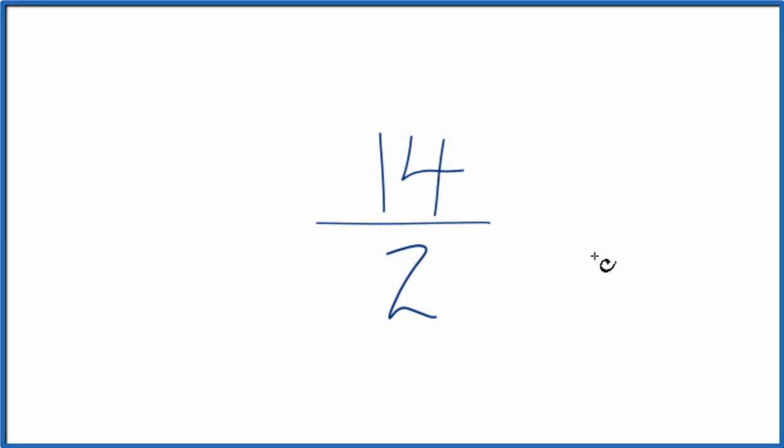So what we want to do is find a fraction that's equivalent to 14 over 2. It has the same value, it's just that we've simplified it or reduced it to lowest terms. To do that, we need a common denominator.